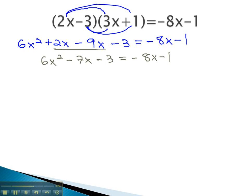The x squared is positive on the left, so let's keep moving things to the left side, adding 8x and adding 1. This gives us 6x squared plus x minus 2 equals zero.